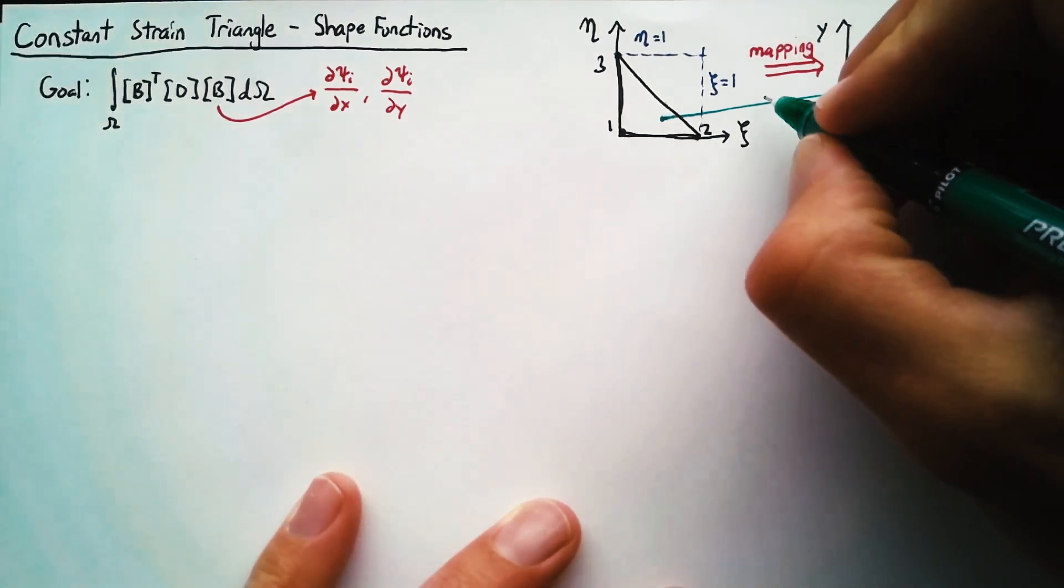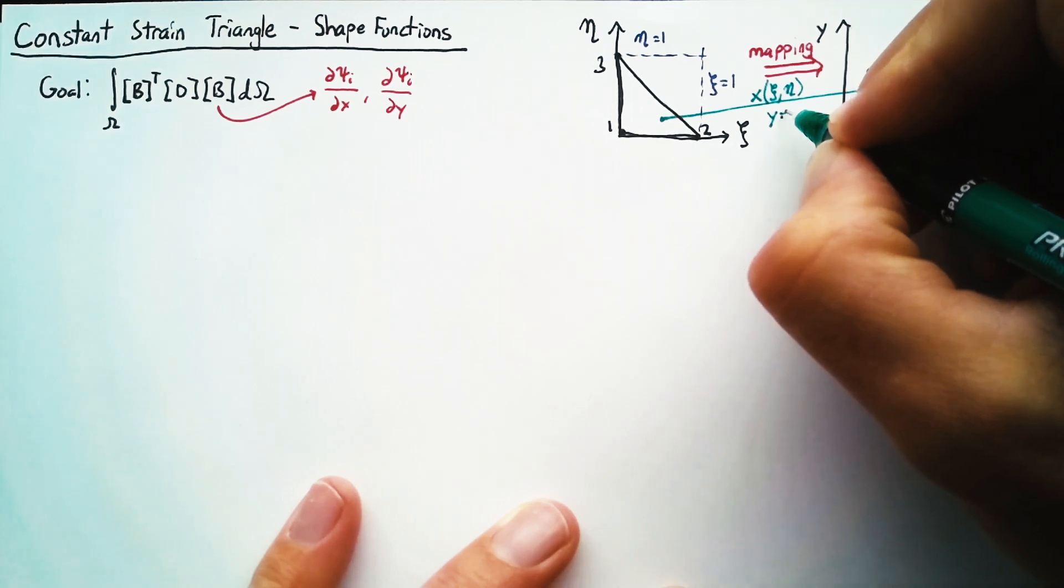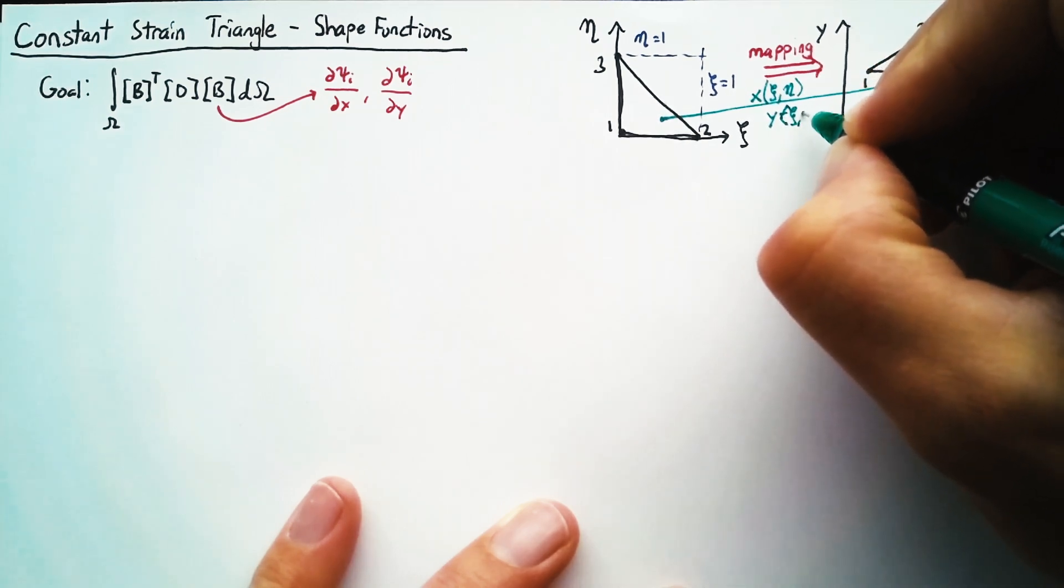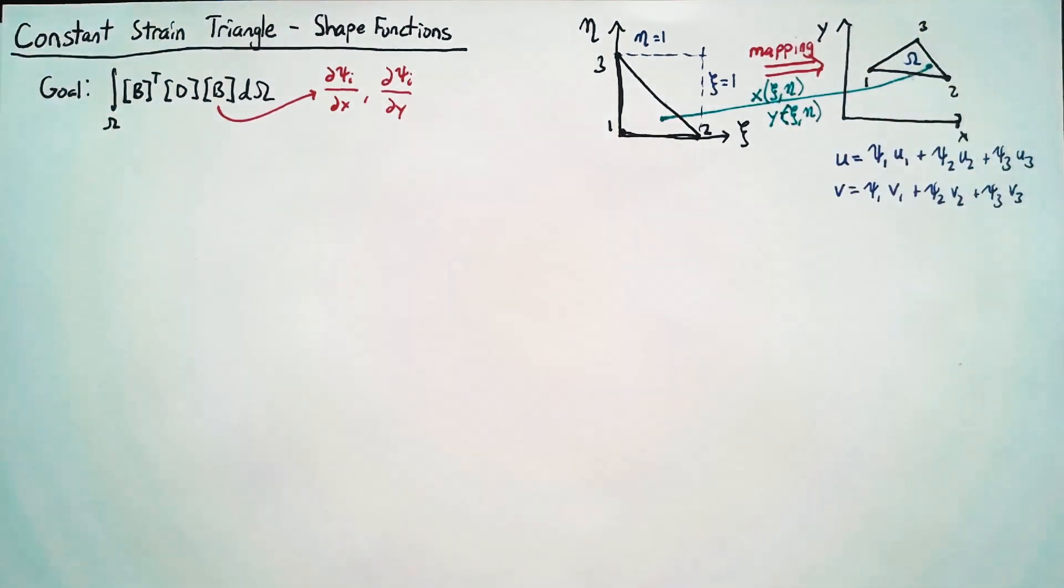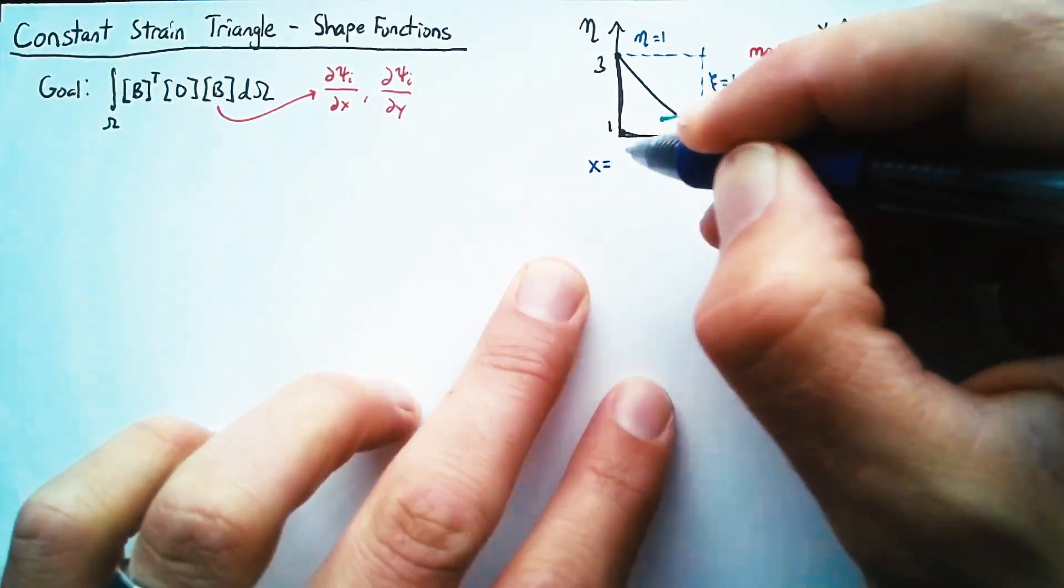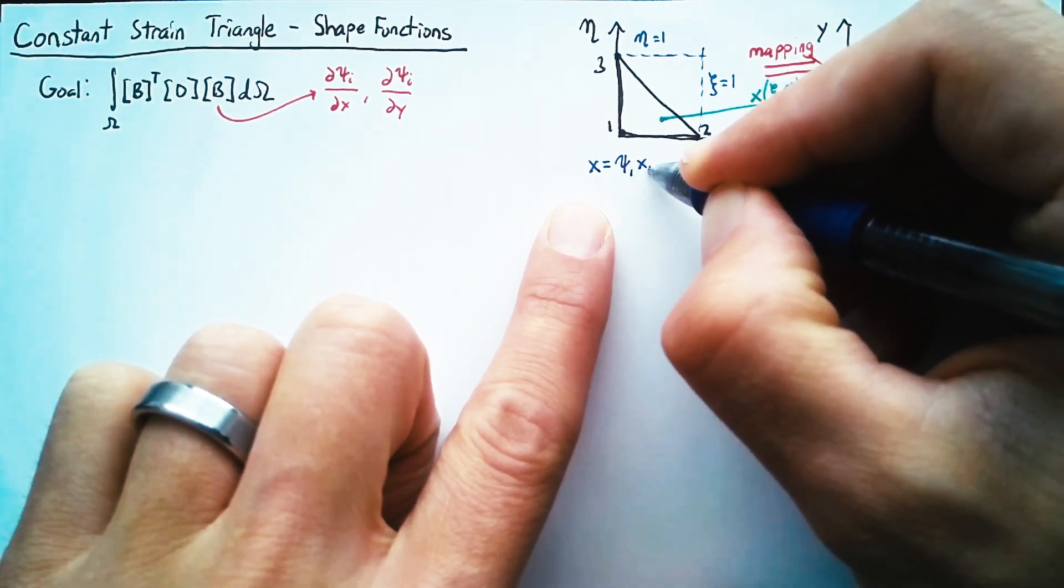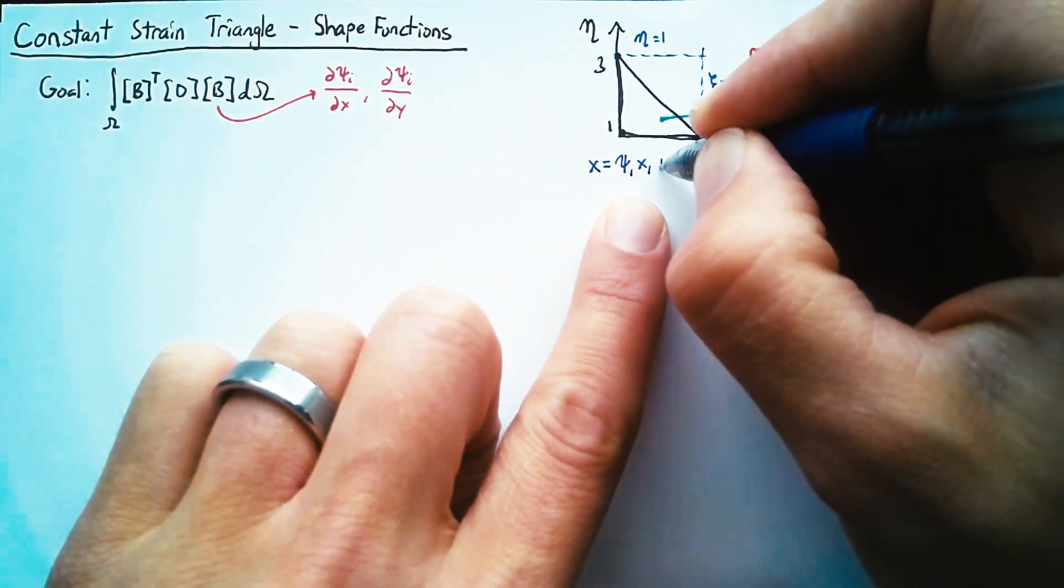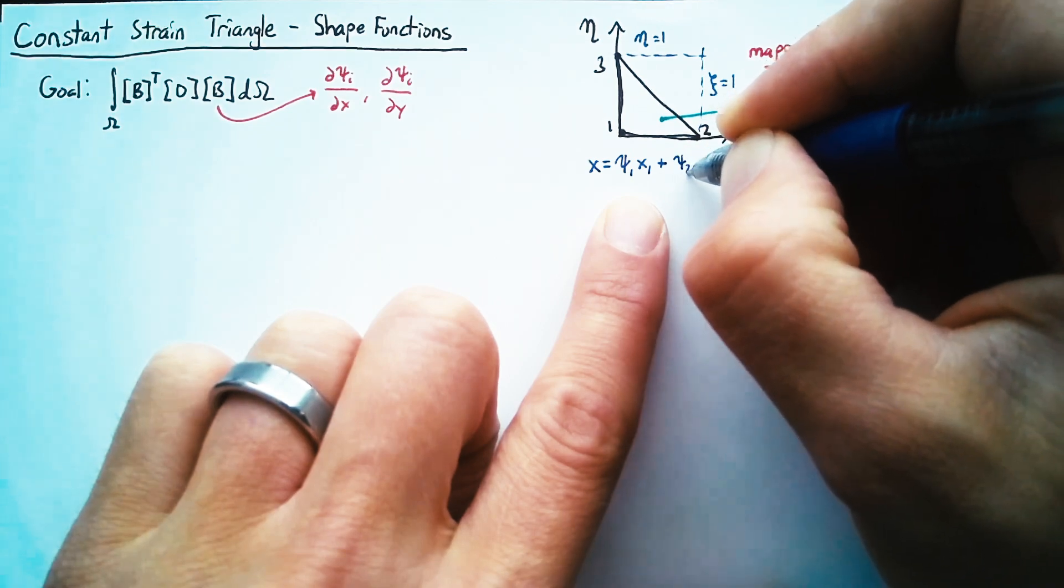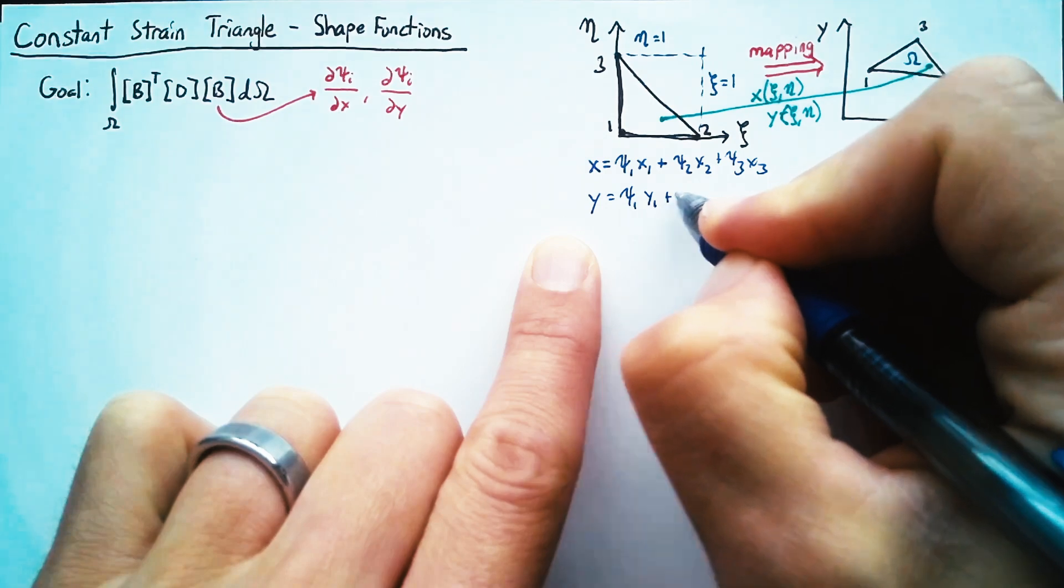And so essentially, we are building a function x, which is a function of C and eta, and a function for y, which is also a function of C and eta. In other words, we're actually going to be building an x, which is also a sum of shape functions multiplied by nodal values. Just this time, it's going to be the nodal x values. And we'll do the same thing for y.